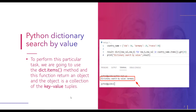Our first topic is Python dictionary search by value. In this section we will discuss how to get the key by value in a Python dictionary. To perform this task we are going to use the dict.items() method, which returns an object that is a collection of key-value tuples. To get the key element by the value we will also use the dict.get() method, which returns the value for the specified key and returns a dictionary view.